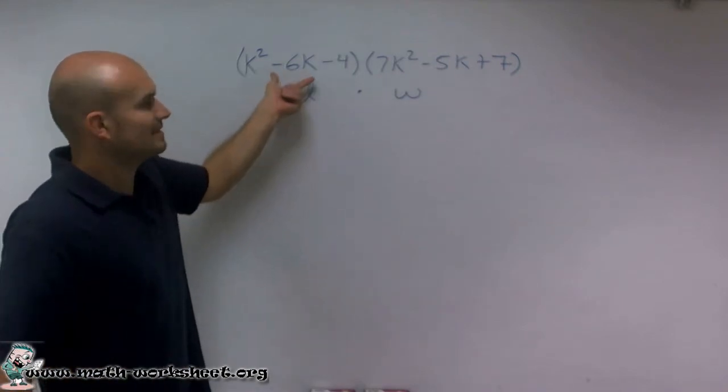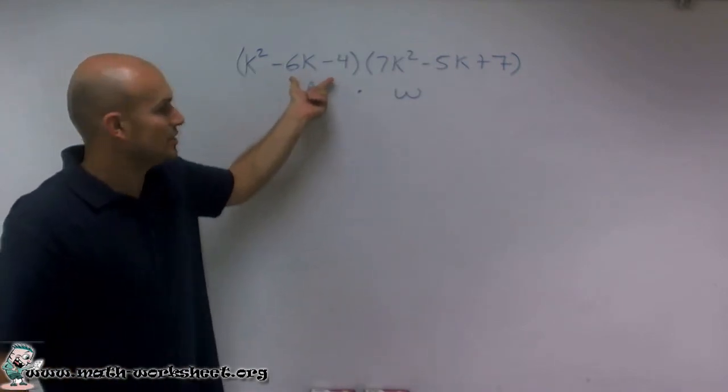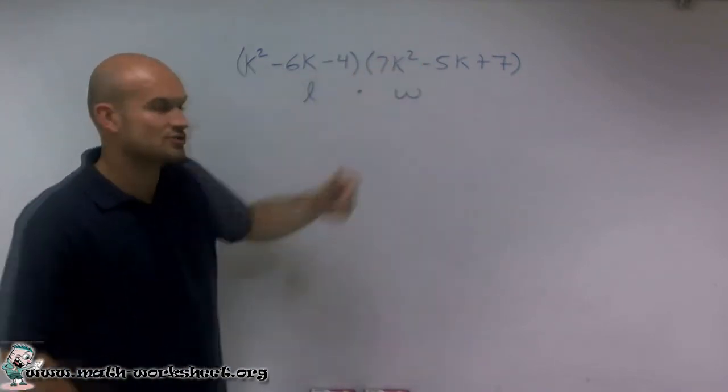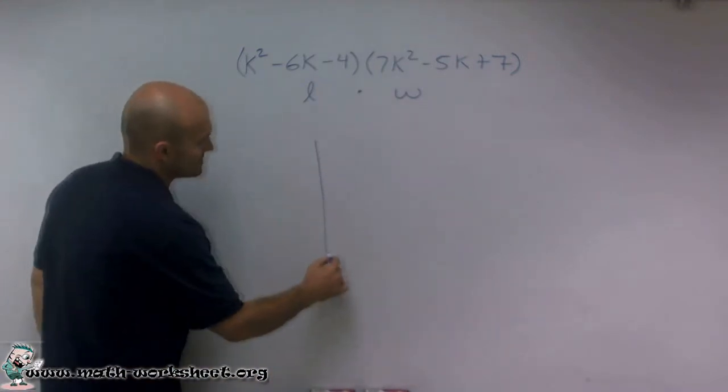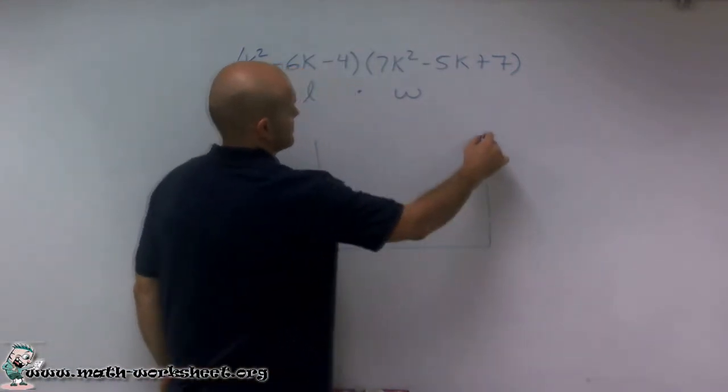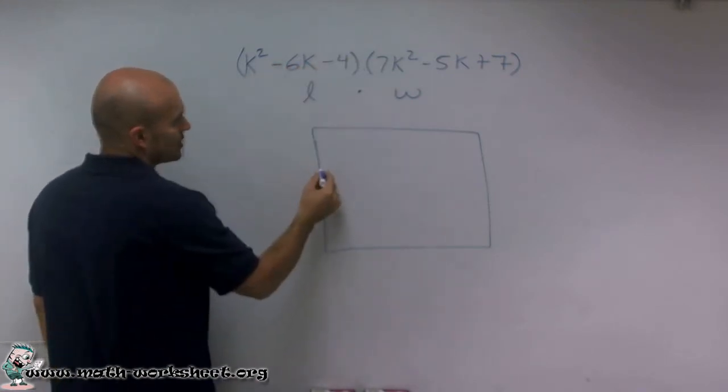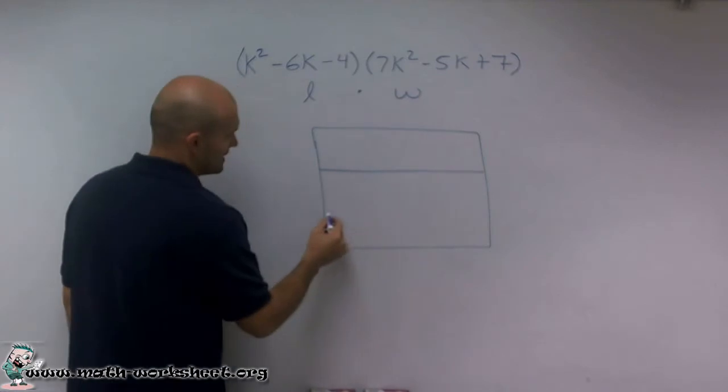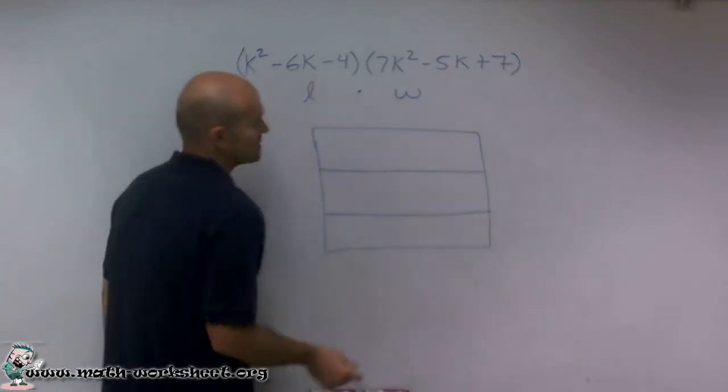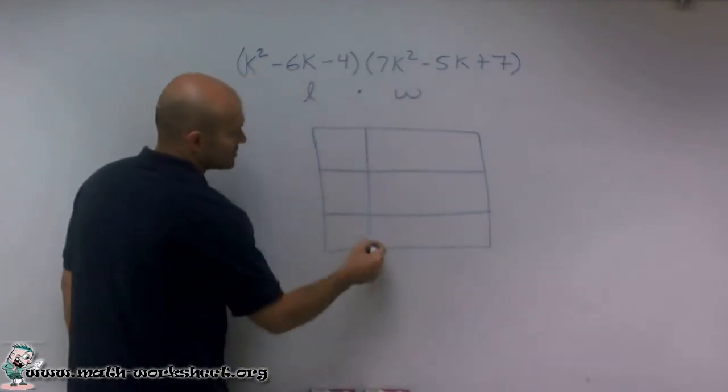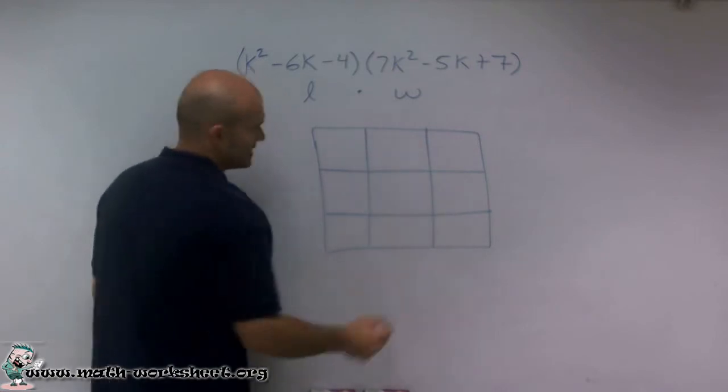So think about now my length is going to be this trinomial and this trinomial. So I'm going to need a pretty big rectangle. So what I'm going to do is since my length has three terms, I'm going to break up my length into three different sections. Since my width has three terms, I'm going to break that up into three sections.